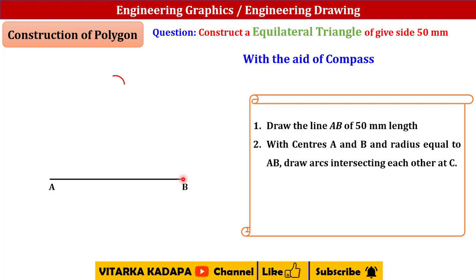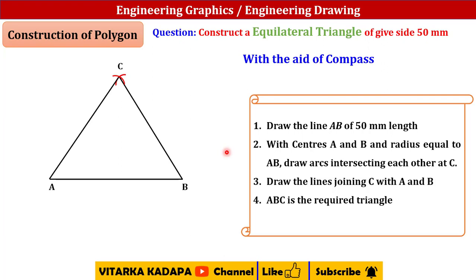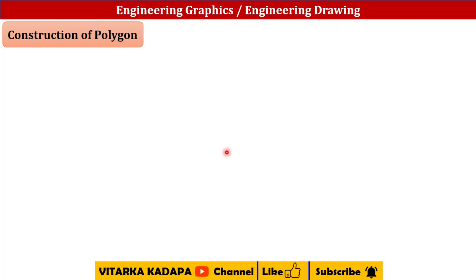Similarly, with center B, place the sharp edge of the compass at B and make an arc that intersects at C. Now join the lines from C to B and C to A. This completes the equilateral triangle with each side having 50 mm.